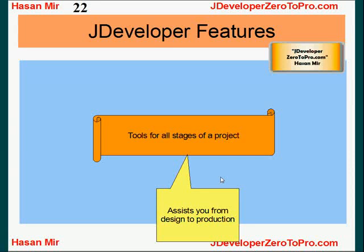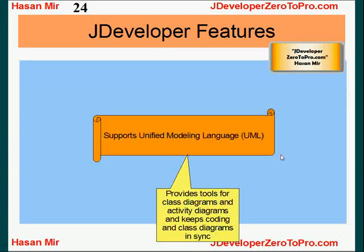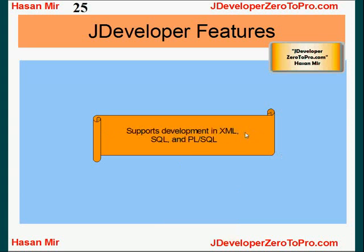One thing people don't know about JDeveloper is that it's a complete tool for all stages of a project. It's usually perceived as only a development tool, but it provides tools for design, modeling, coding, debugging, testing, profiling, and more. It also supports UML — Unified Modeling Language. When you write a Java program you have to design your classes first, and UML is used to do the modeling for your class design, and JDeveloper supports that as well. Another misconception is that JDeveloper is only for Java programming — you can also do SQL and PL/SQL programming in JDeveloper. PL/SQL is Oracle's Procedural Language Extension to SQL.